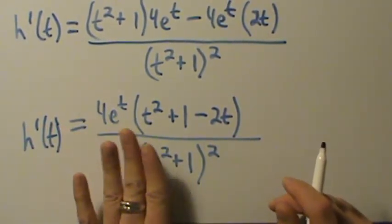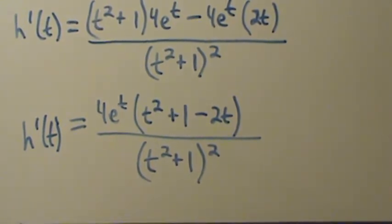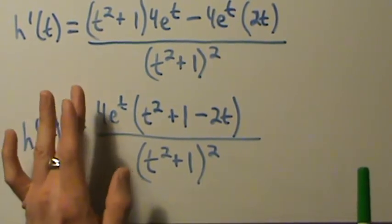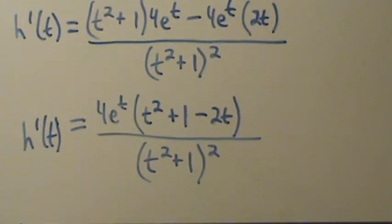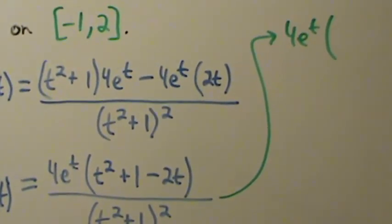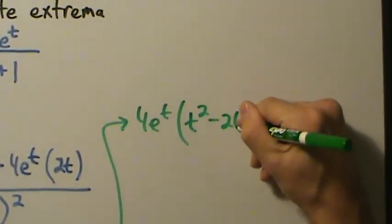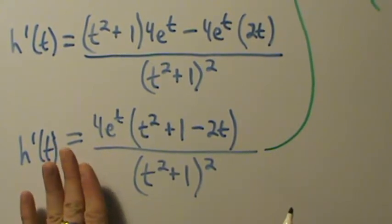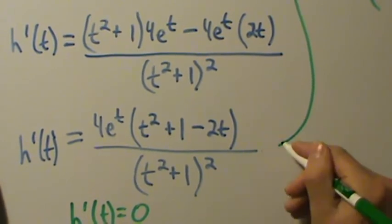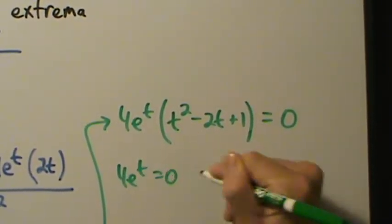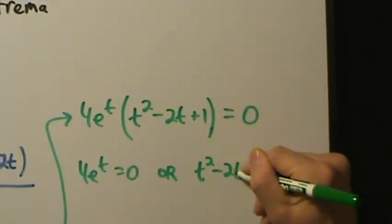Now we just want to know where the derivative equals zero. A fraction equals zero when the top is zero, so we set the numerator equal to zero: 4e to the t times (t squared minus 2t plus 1) equals zero. That means either 4e to the t equals zero or t squared minus 2t plus 1 equals zero.